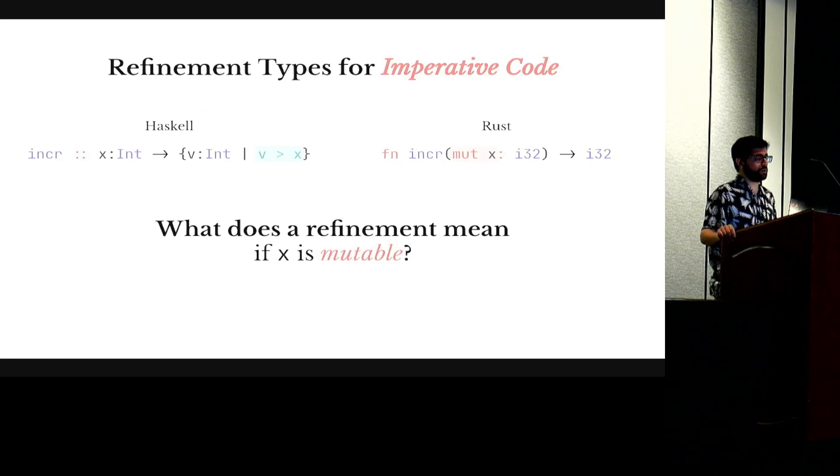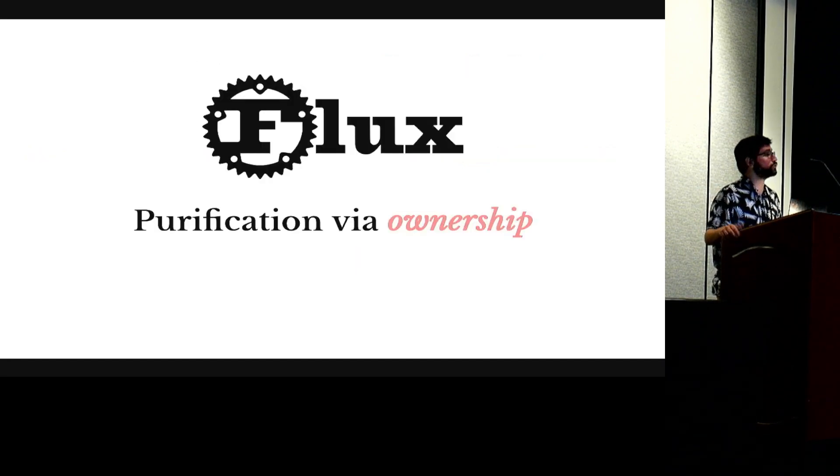So refinement types, it's challenging to do this for imperative code because the very notion of the refinements gets complicated. What does it mean for a variable to have a refinement or to depend on a variable if the variable can change over time? So our solution to this is Flux, that shows how we can use the ownership mechanism of the Rust programming language to extract a pure fragment that we can safely depend on.